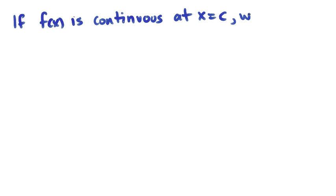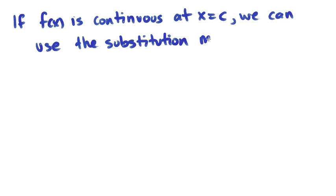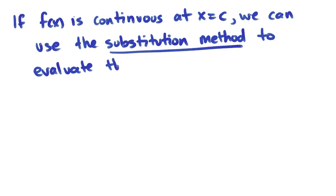Another neat thing that happens is that if our function is continuous at a point, x equals c, we can use something known as the substitution method to evaluate the limit at x equals c.